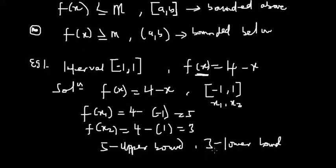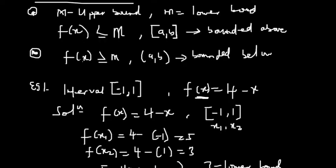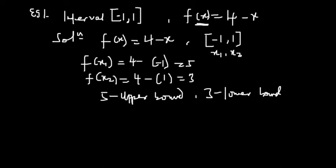So our upper bound is 5 and our lower bound is 3. Three is less than the function, and five is greater than or equal to the function — that's all we need. Once you know how to arrive at the upper and lower bounds, you are good to go.